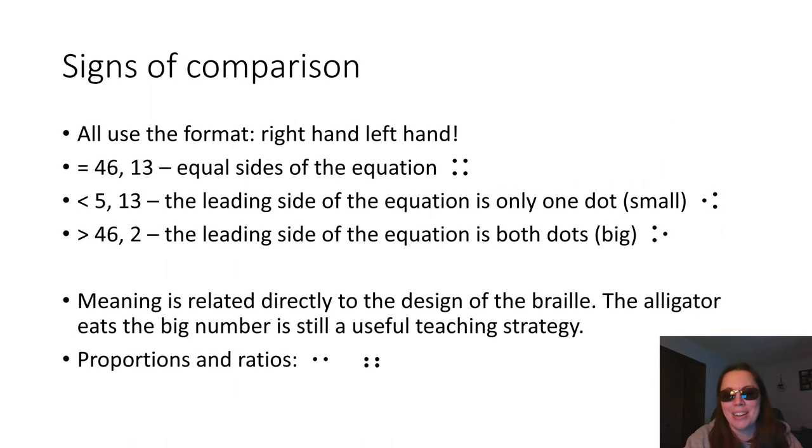Now that we have our signs of operation, we need to be able to actually solve that equation. We need a sign of comparison. These serve as the fulcrum of the scale, the balance point for the two sides of equation. If 4x is equal to 8, it tells us the balance is level. If 4x is greater than 8, it tells us that we have one side greater than the other. If 4x is less than 8, it tells us that the scale is balanced the other way. So these are our signs of comparison.